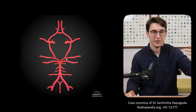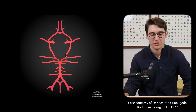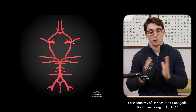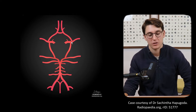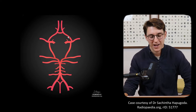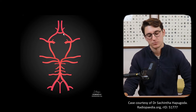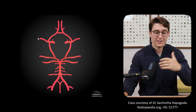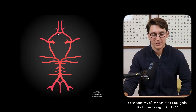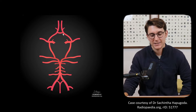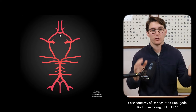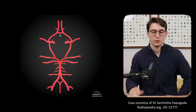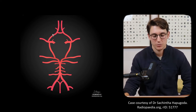The posterior communicating artery joins our anterior and posterior circulation, and then the internal carotid artery bifurcates into our middle cerebral artery and our anterior cerebral artery. The circle is then completed by the anterior communicating artery, which allows blood to flow between our two anterior cerebral arteries.